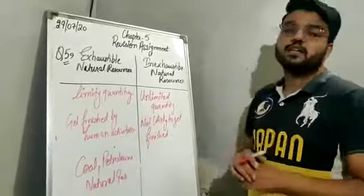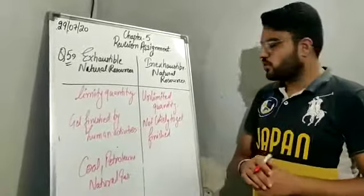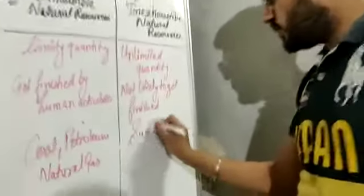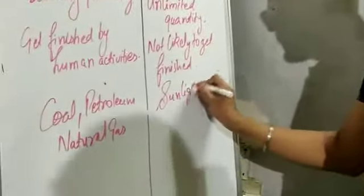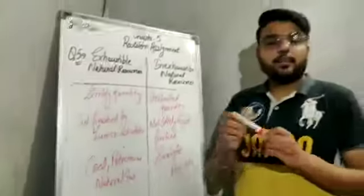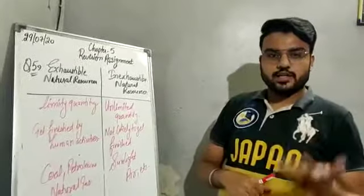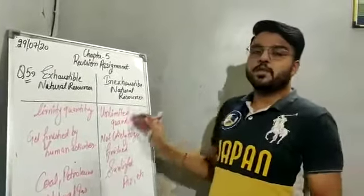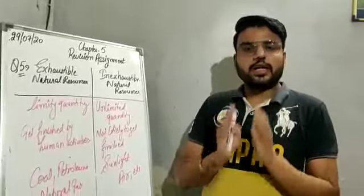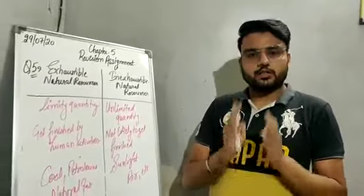Now we have inexhaustible natural resources. Examples are sunlight, air, etc. Sunlight and air are present in unlimited quantity in nature, so they are examples of inexhaustible natural resources.